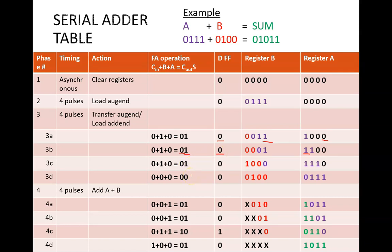The same pattern happens over the next two clock cycles. Notice the color coding in the table. These purple numbers show how the augend, or A value, is first passed in to register B, and then shifted one bit at a time into register A.